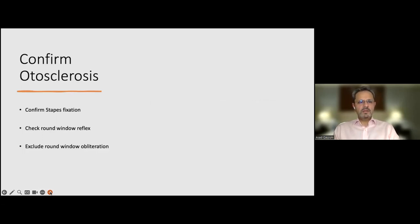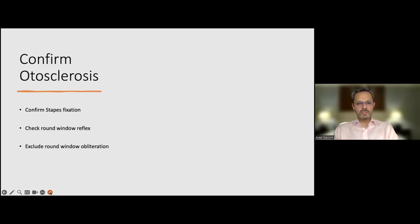You then need to confirm otosclerosis and ensure it is the stapes that is fixed and not other ossicles. You need to confirm that the round window reflex is absent — though it is not always visible due to adhesions or location. What is important is to make sure there is no bony obliteration or sclerosis around the round window, which should also have been picked up on the scans earlier.